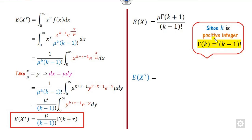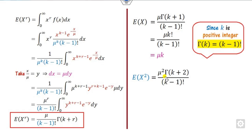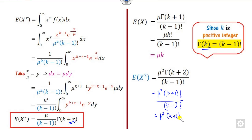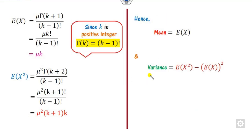Substituting and replacing K as K+1, this becomes K factorial upon (K-1) factorial. K upon (K-1) factorial will be cancelled, giving us the result. Similarly, for R=2, it is (K+1) factorial upon (K-1) factorial, which you can open as (K+1)*K*(K-1)..., and (K-1) factorial cancels out, leaving K*(K+1).